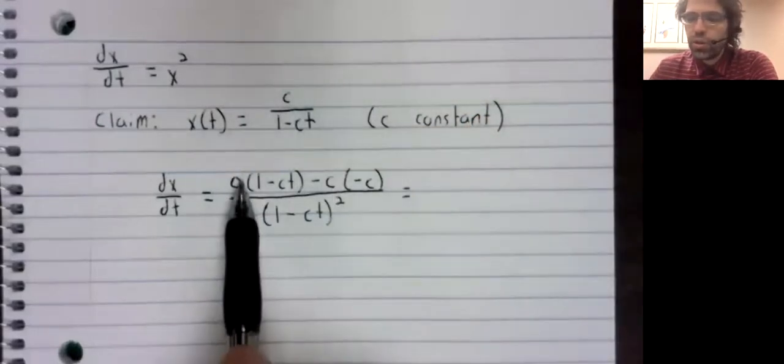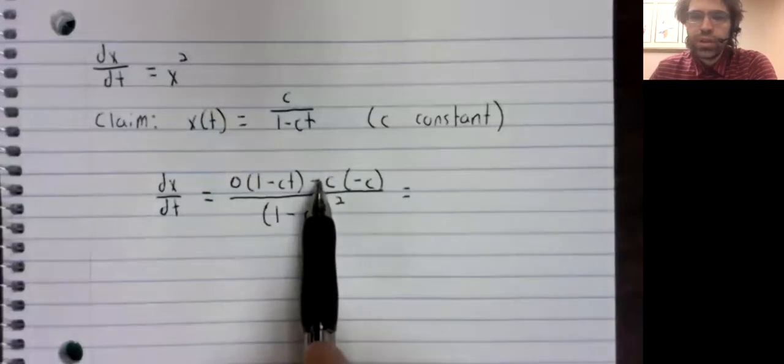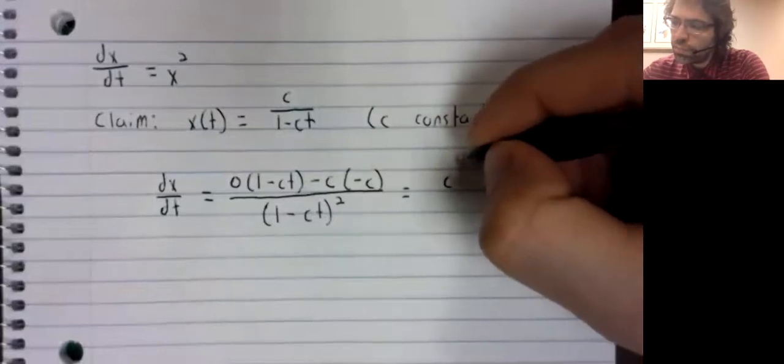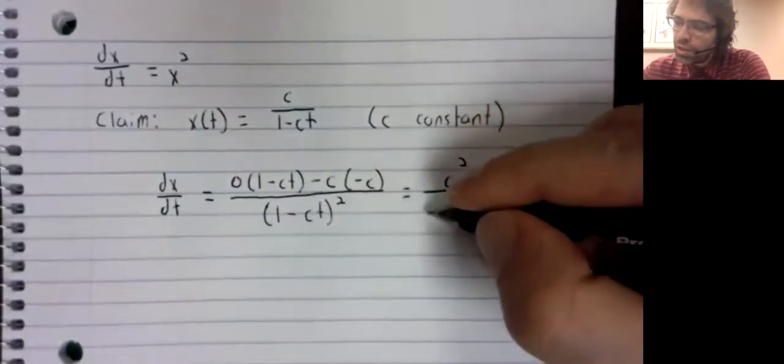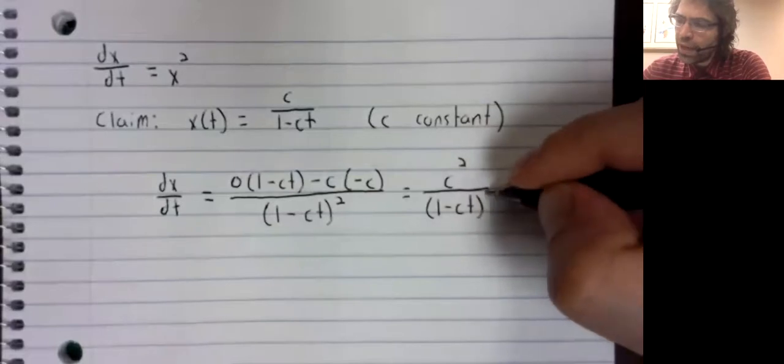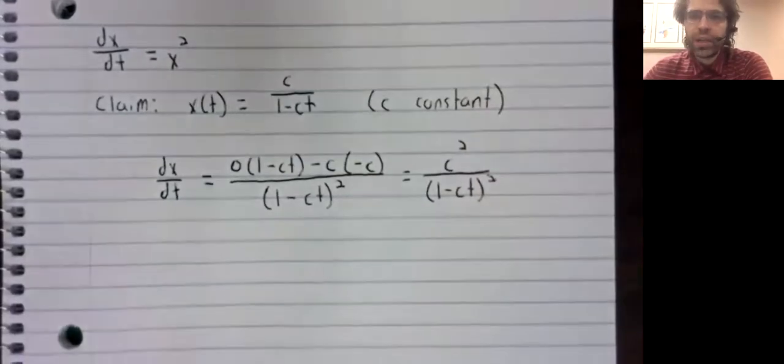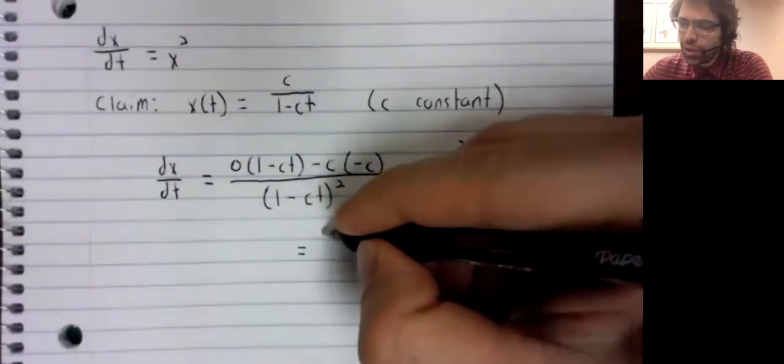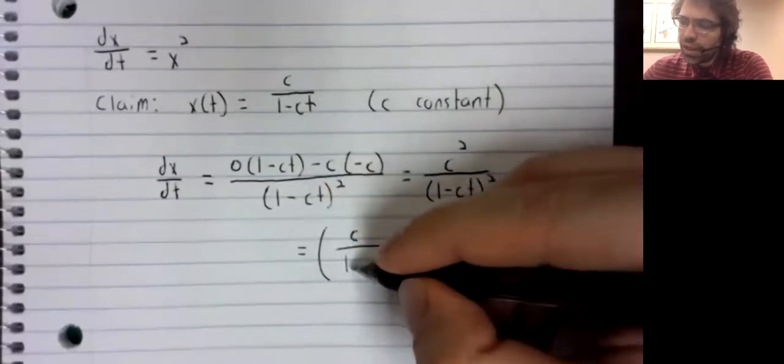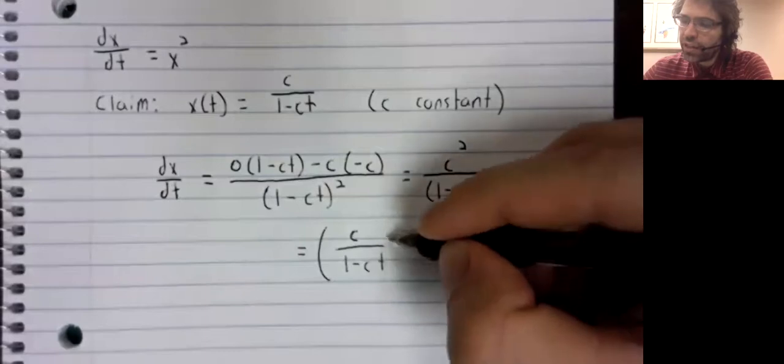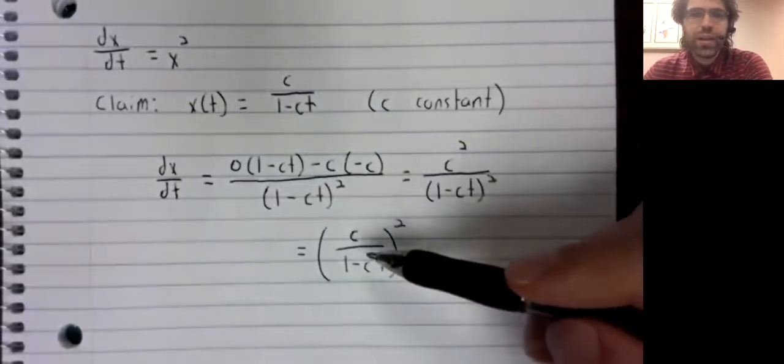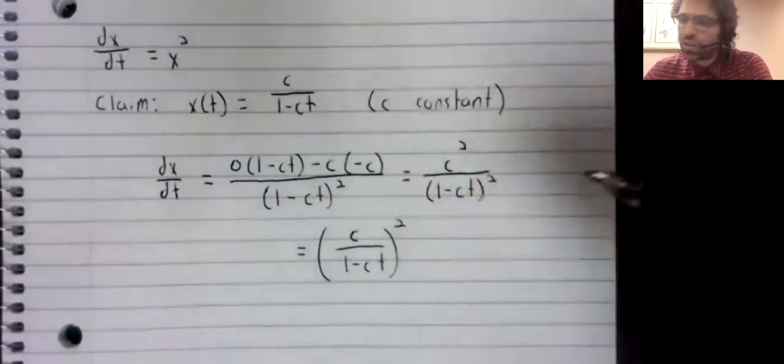In the numerator, this turns to zero, this negative sign and this negative sign cancel. So if we have our numerator squared and our denominator squared, we can write that as this fraction squared, and this fraction is precisely x.